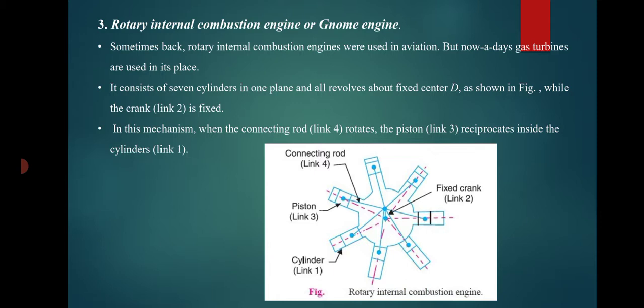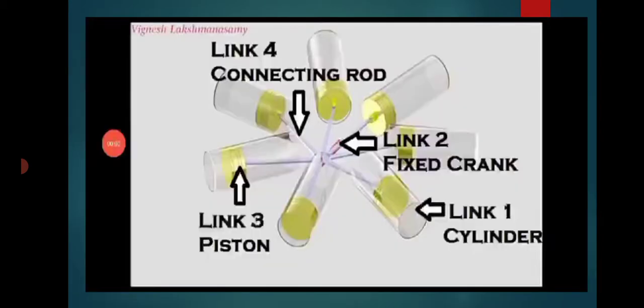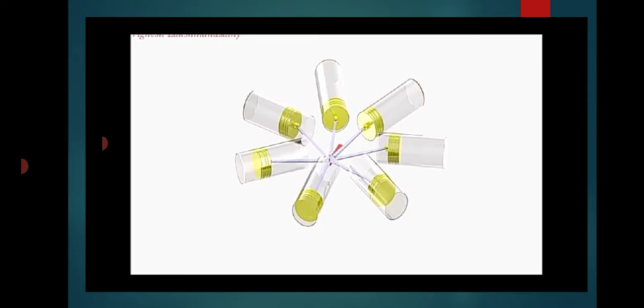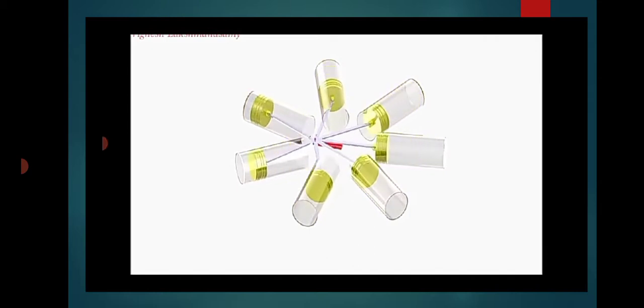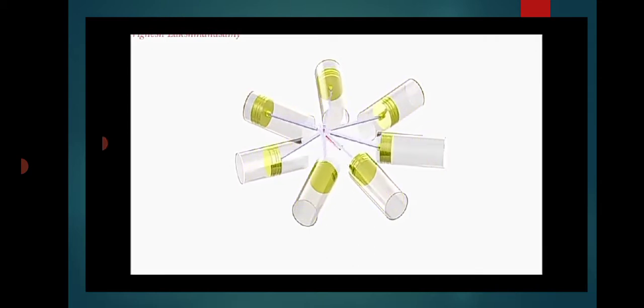So this is the rotary internal combustion engine. This is the animation slide. It has a cylinder, connecting rod, piston, and crank. The connecting rod rotates while the crank is fixed. The piston moves up and down inside the cylinder, sliding reciprocally.